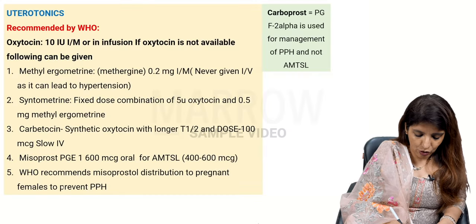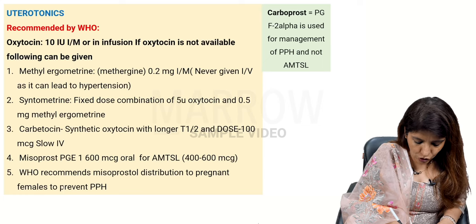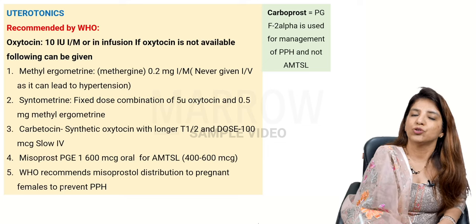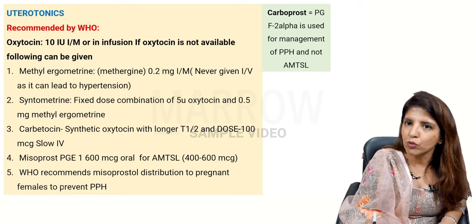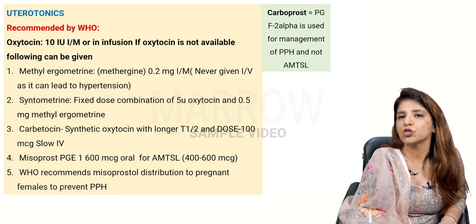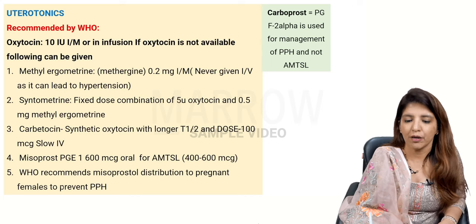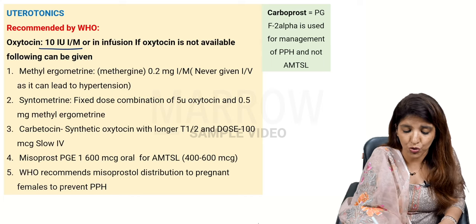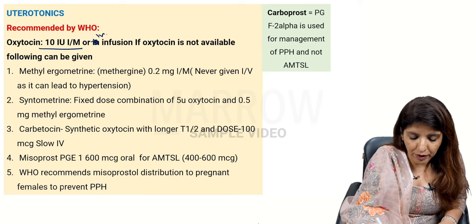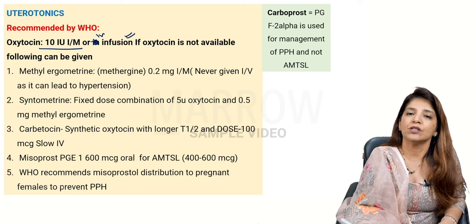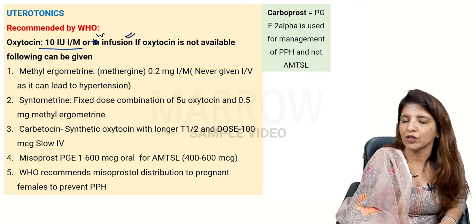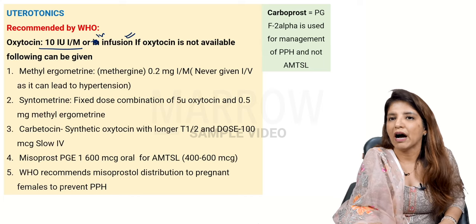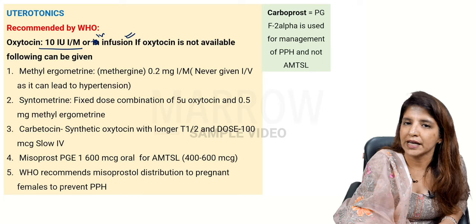For step one, the uterotonic recommended by WHO is oxytocin. The dose to prevent PPH in AMTSL is 10 international units, given either IM or by IV infusion. IV infusion is preferred because the onset of action is within one minute, whereas IM onset is in three minutes.